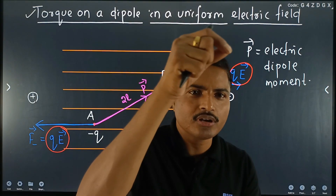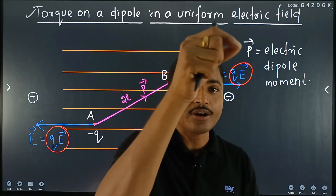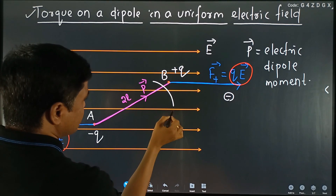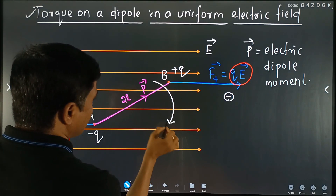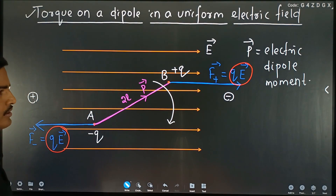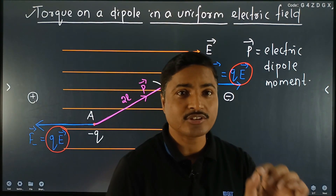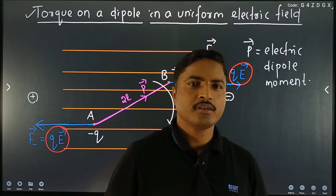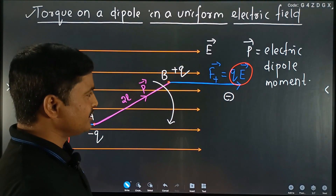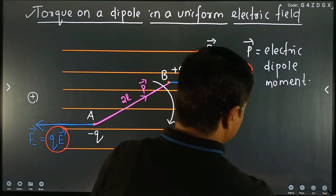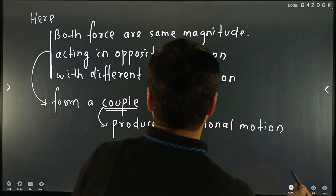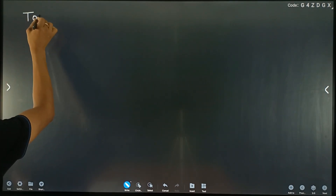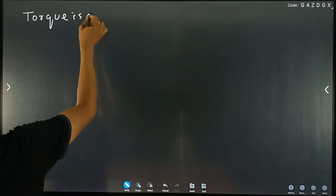Because the two forces are equal in magnitude, opposite in direction, and act along different lines of action, the dipole starts to rotate in the clockwise direction. So rotational motion is present. For rotational motion, torque is responsible — if a net torque is present, the body starts to rotate about a given axis.